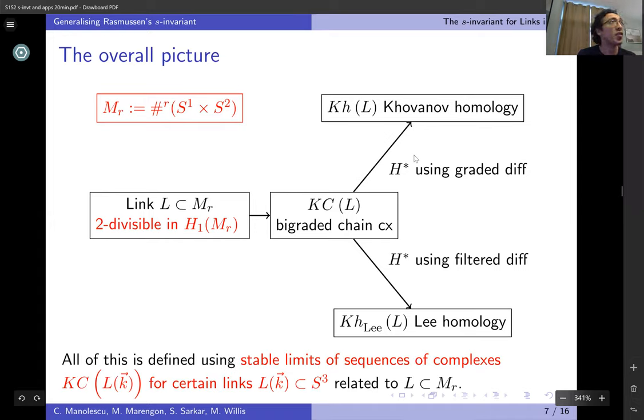Whereas in the old scenario everything was built combinatorially, here everything is still built combinatorially, but it is more complicated. It's all defined using stable limits of sequences of complexes coming from links in S³.